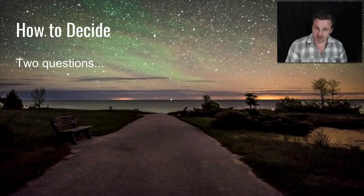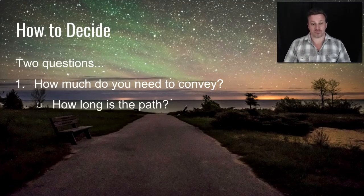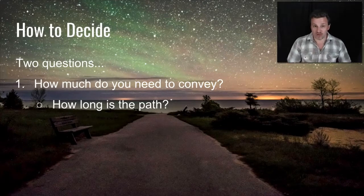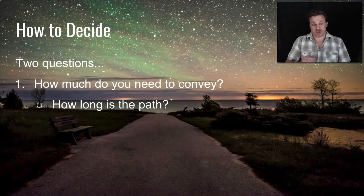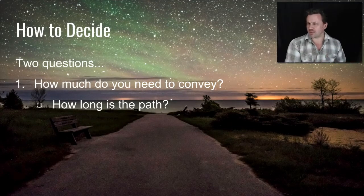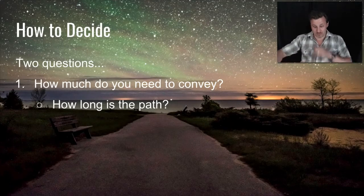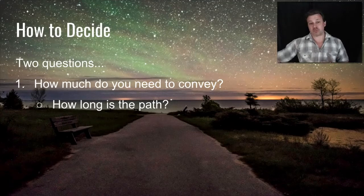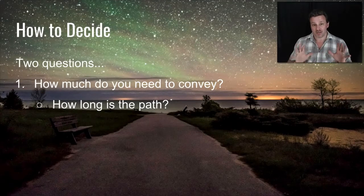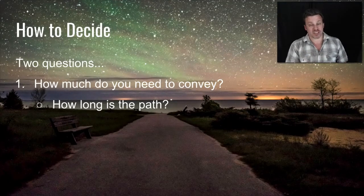How do we decide how many communications we want and how much to put into each one? First: how much do you need to convey — how long is the path? That depends very much on your prospect's level of awareness when you meet them. Do you have to emphasise the problem? Do you have to acknowledge other solutions exist? Or are they already aware of your solution? The length of the path dictates how many steps you need to take to complete the journey. All we're doing in this campaign design is planning for each of those steps.